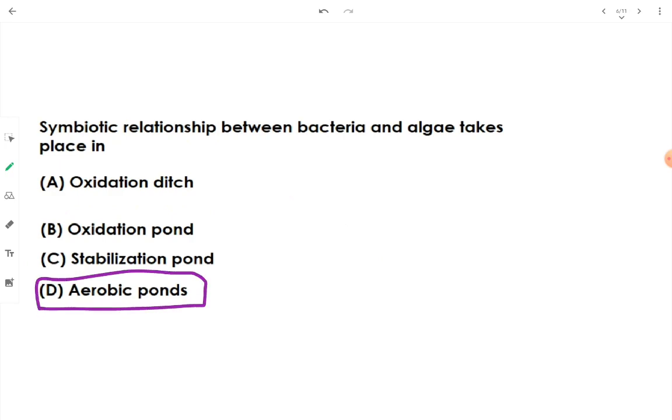Symbiotic relationship between bacteria and algae takes place in aerobic ponds. In aerobic pond there exists a symbiotic relationship between bacteria and algae. Symbiotic relationship is kind of give and take relationship. For example, two species coexist by exchanging some advantages. You may know the Venom character from Marvel Cinematic Universe - the venom has its host as Eddie Brock, and Eddie Brock feeds the venom while venom gives all the superpowers to Eddie Brock.